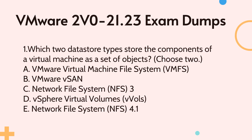Question 1: Which two datastore types store the components of a virtual machine as a set of objects? Choose two. A. VMware Virtual Machine File System (VMFS). B. VMware vSAN. C. Network File System (NFS). D. vSphere Virtual Volumes (VVols). E. Network File System (NFS) 4.1.